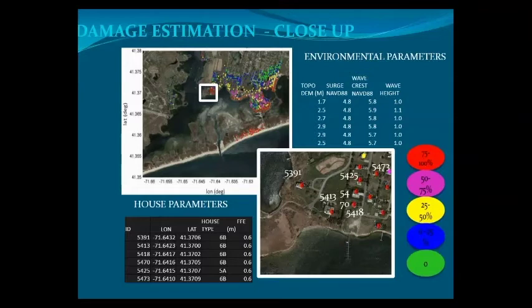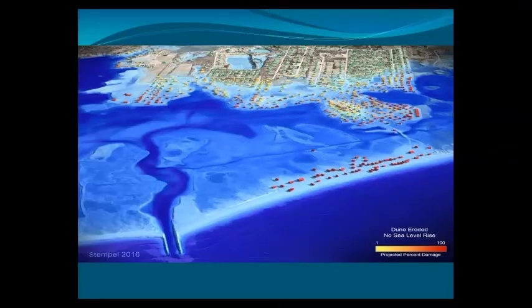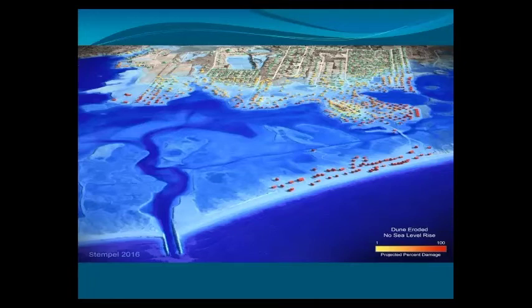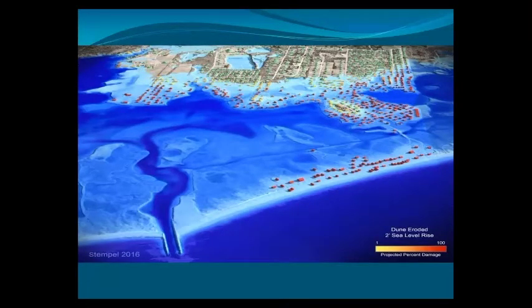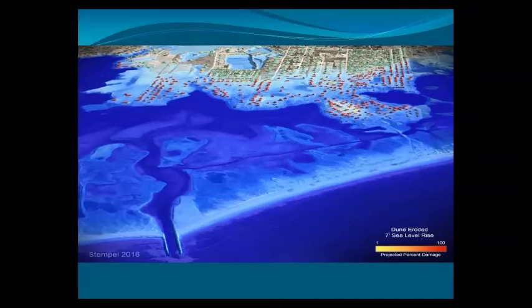We worked with students and an architect at the University of Rhode Island who developed 3D models of each structure. We imported the data so people can see what a visual might look like. The blue represents the flood envelope from a 100-year event; colors represent percent damage to each structure. People can actually recognize their homes. At two feet of sea level rise, the red really starts to pick up and the flood event penetrates further. At seven feet, there's nothing left on the beach and it's virtually all red.